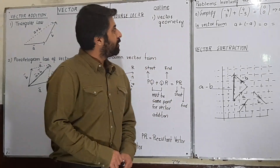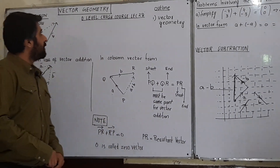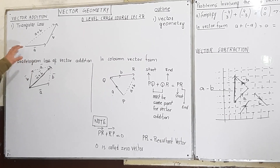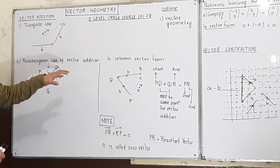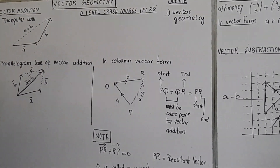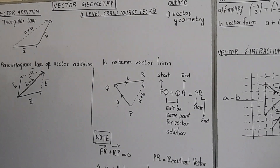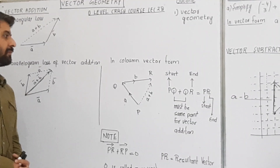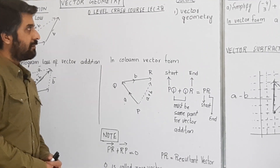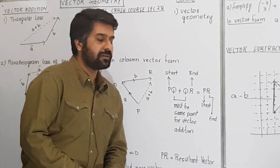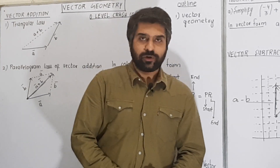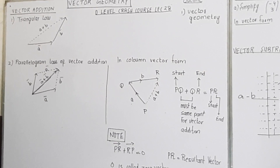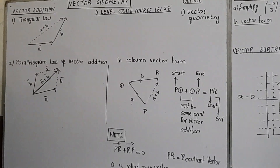Today we are going to study vector geometry, and in that we are going to discuss vector addition and vector subtraction. That is necessary to understand the problems in vector geometry. In my last lesson I discussed the addition and subtraction of vectors in column vector form. Today we are going to discuss vector addition laws as well as subtraction laws.